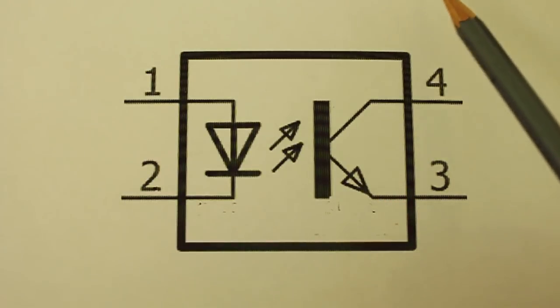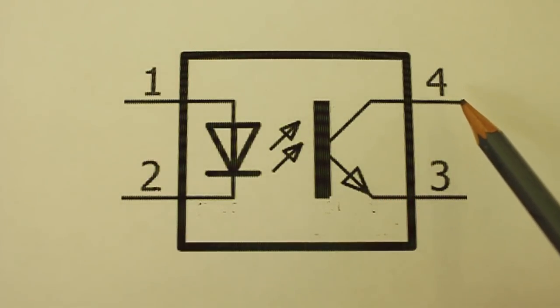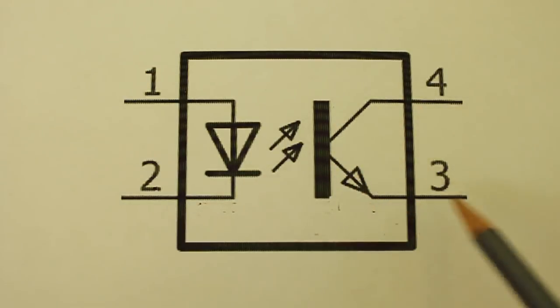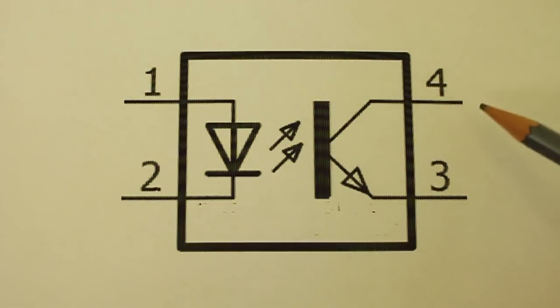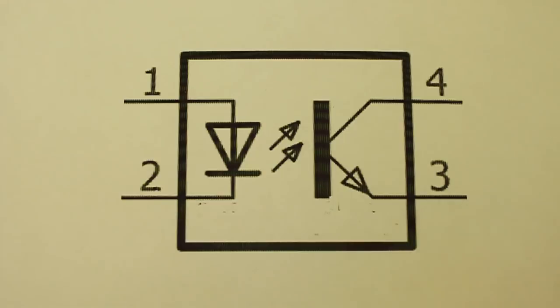That is, current cannot flow through collector and emitter. But when we apply a current to the base, then the switch closes and the current now can flow from collector to emitter.